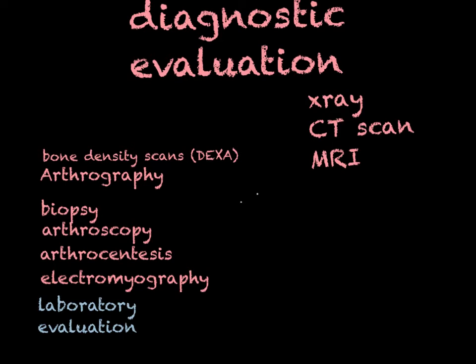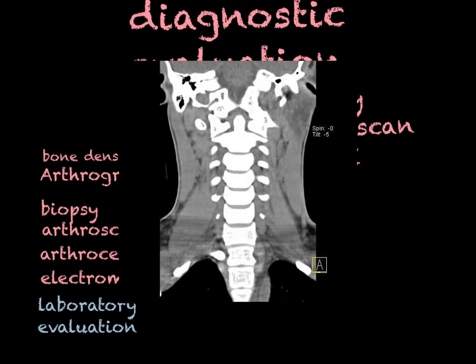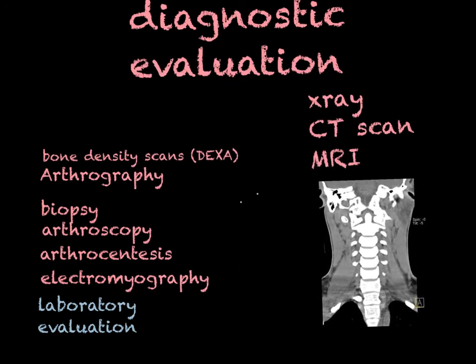A CT scan — computed tomography — can be done with or without contrast medium and gives a very detailed picture, much more detailed than a standard 2D x-ray, taking many pictures from different angles. We can see tumors, injury to soft tissue, ligaments, tendons, and — in trauma — things we might not see on an x-ray, such as bleeding in the soft tissues.